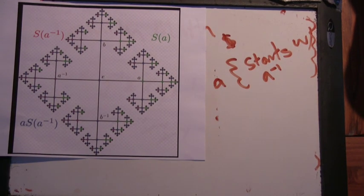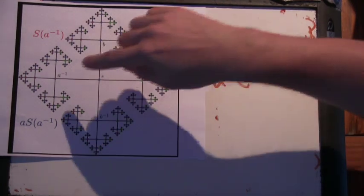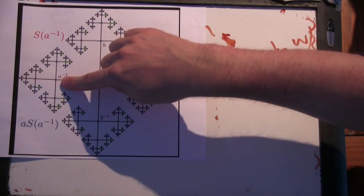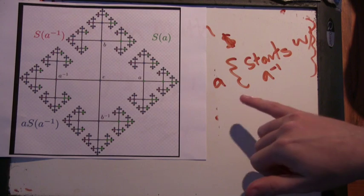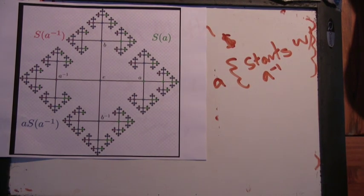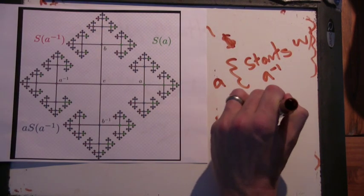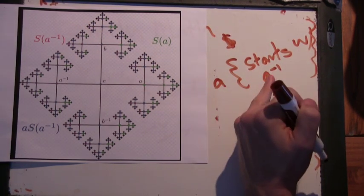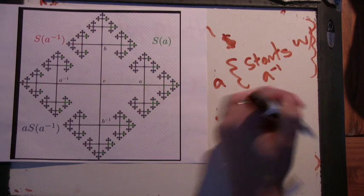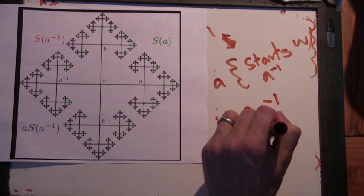All right. Okay. So I'm going to take this whole piece of the graph, and I'm going to multiply it by A. So what do you think happens now? Well, I think you're going to get the same part, but plus this point. Okay. Because the word A inverse is going to simplify to the identity. Okay. So A inverse is definitely in the starts with A inverse set. So when I multiply that by A, I get the identity.